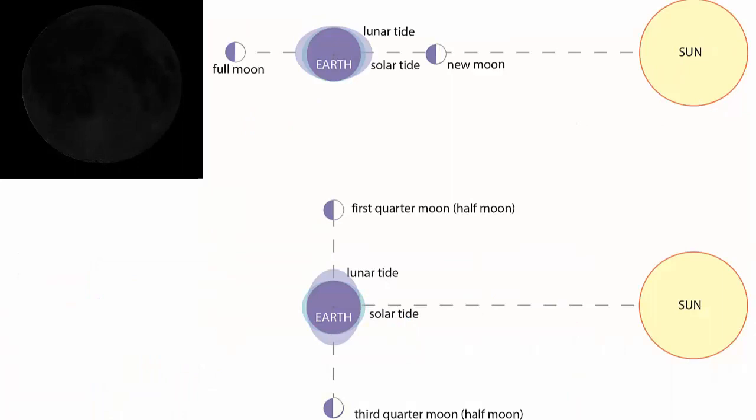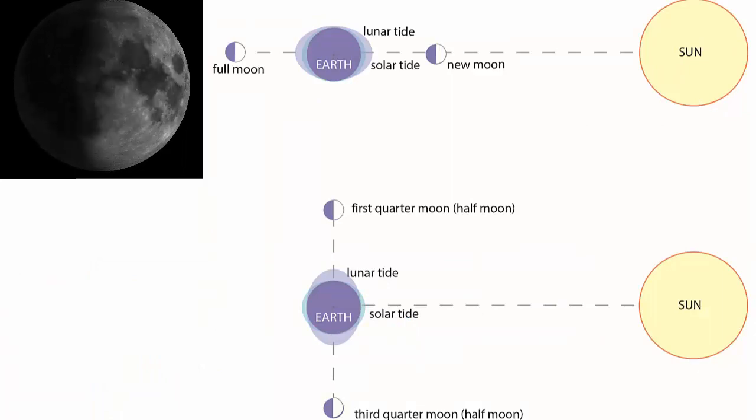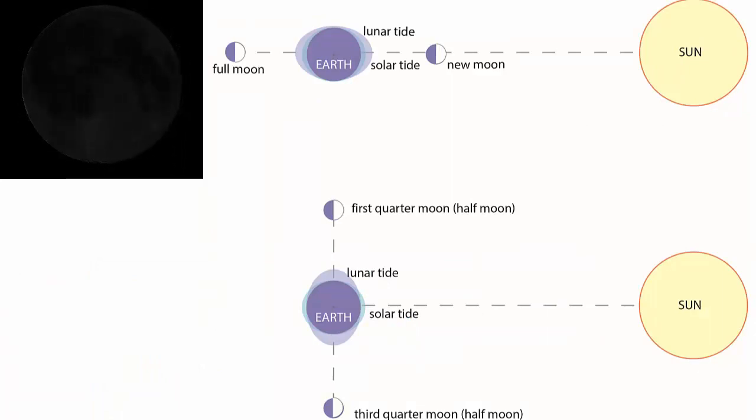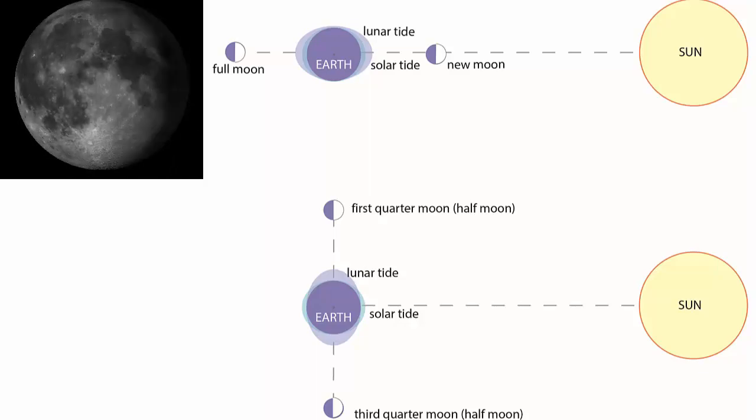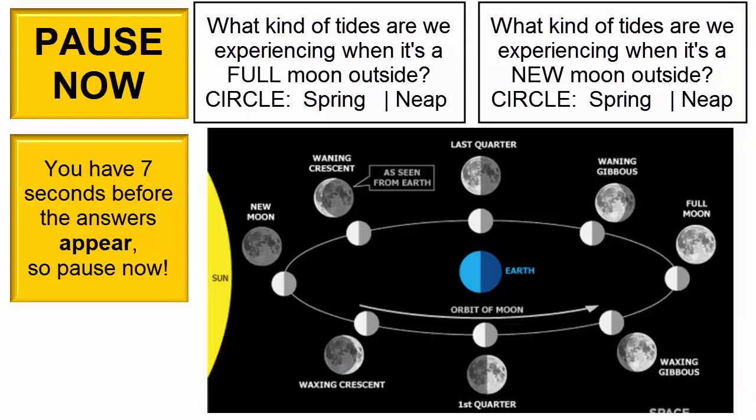Turns out we can walk outside at night, look up into the night sky, and based on the phase of the Moon, determine whether we're experiencing neap or spring tides. Pause now.